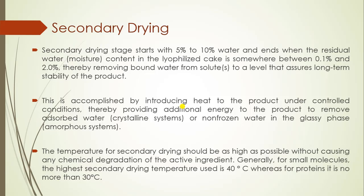In secondary drying, bound water, unfrozen water, or adsorbed water in a solid system is removed, and for this we have to apply high temperature. The temperature for secondary drying is generally around 40 degrees Celsius for small molecules, and for larger molecules like proteins it is around 30 degrees Celsius.